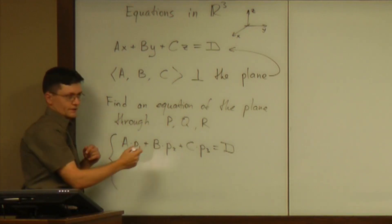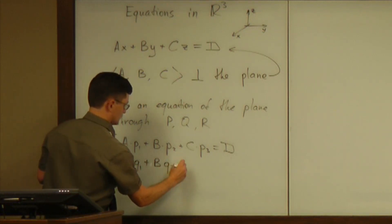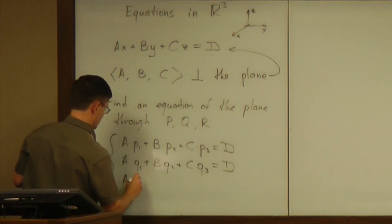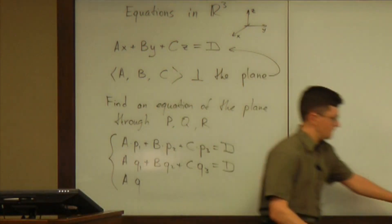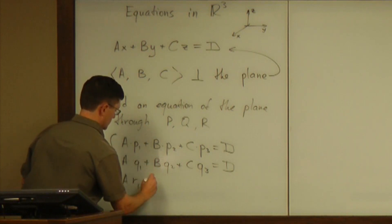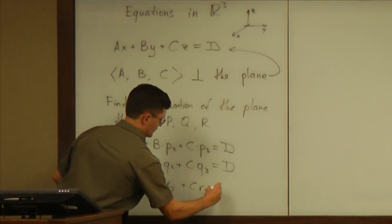And you want those three conditions to happen simultaneously. The plane should pass through all three. So A Q1 plus B Q2 plus C Q3 equals D, and A R1 plus B R2 plus C R3 equals D.